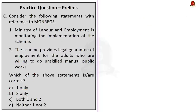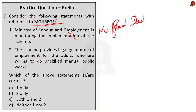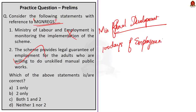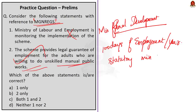The third practice question is on MGNREGS and is a two-statement question. Statement one is incorrect — monitoring and implementation is done by the Ministry of Rural Development, not the Ministry of Labour and Employment. Statement two is correct — MGNREGS provides a legal guarantee for 100 days of employment in every financial year to adult members of rural households willing to do unskilled manual work at statutory minimum wage. Since the question asks for the correct statement, the answer is option B — statement 2 only.